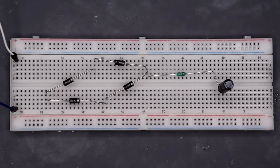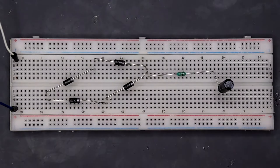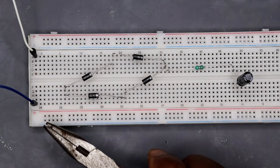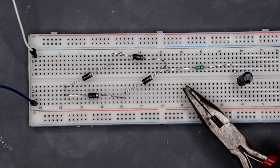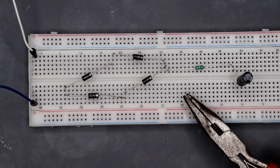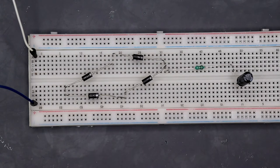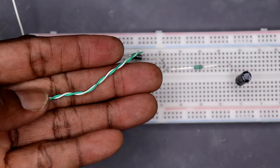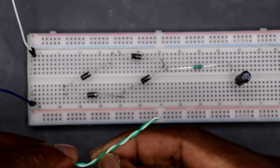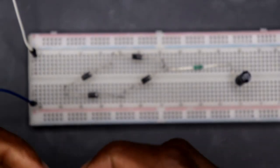So again we have the terminals from the output of the transformer, we have the rectification stage, and now we have the filtering stage with the coil and the capacitor. Now we're going to make our connections as I separate these wires and strip the ends.